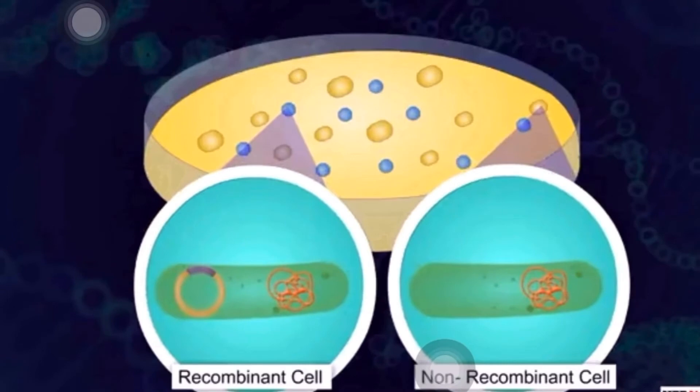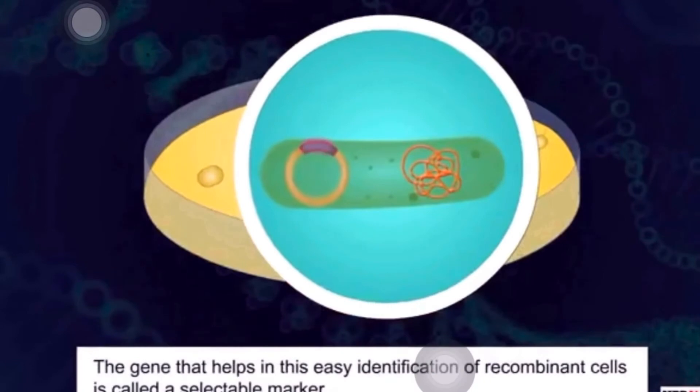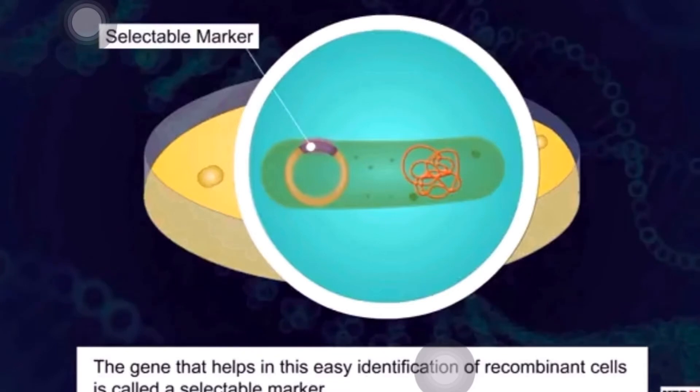Hence, this ampicillin resistant gene has made it easy to identify recombinant from that of the non-recombinant. The gene that helps us in easy identification of recombinant cell is called a selectable marker.